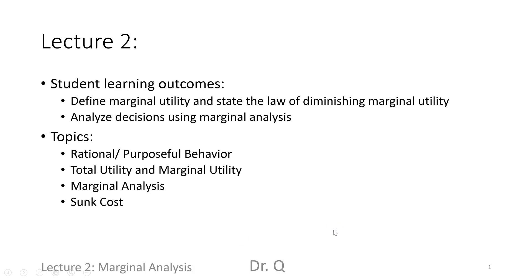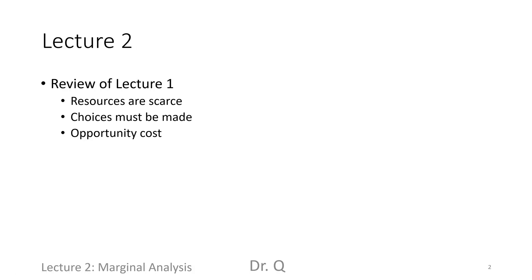Before the beginning of the new material, let's do a quick review of last class. In Lecture 1, we discussed that because resources are desirable and limited, when facing multiple options, we have to pick one alternative over another. The value associated with the best foregone alternative is the opportunity cost of the chosen one. Generally speaking, we want to minimize the cost and maximize the value when making a decision.